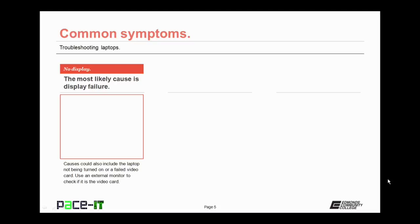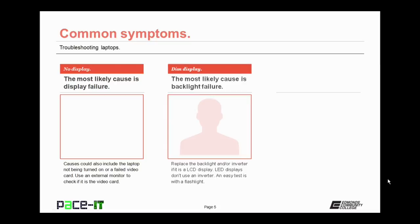Use an external monitor to check to see if it's just that the video card has failed. A dim display, most likely the backlight has failed. In this case, you should replace the backlight and or the inverter if it's an LCD display. LED displays don't use an inverter, so you only need to replace the backlight in that case. An easy way to test to see if it's just the backlight has failed is to use a flashlight on the screen. If you can see an image, then the backlight has failed.